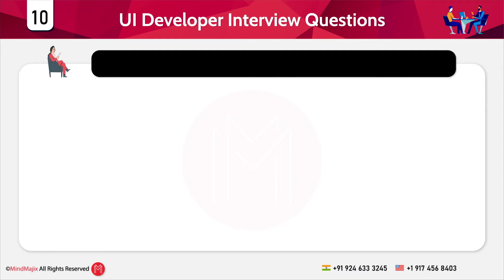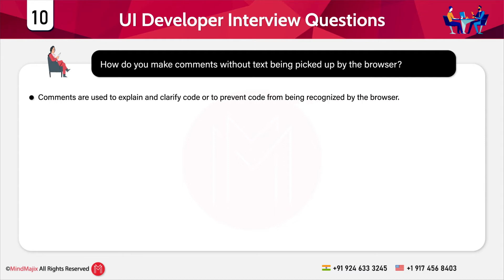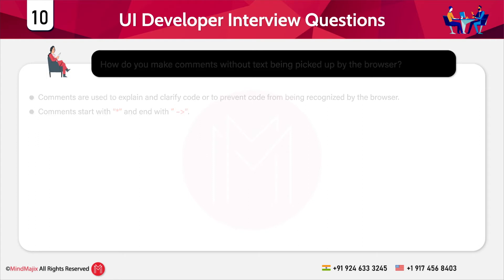The next question is: how do you make comments without the text being picked up by the browser? Comments are used to explain and clarify code or to prevent code from being recognized by the browser. Comments must start with the opening comment syntax — angle bracket, exclamation mark, double hyphen — and must end with a double hyphen followed by a closing angle bracket.